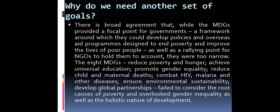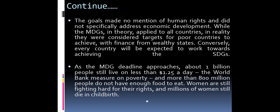The 8 MDGs — reduce poverty and hunger, achieve universal education, promote gender equality, reduce child mortality, combat HIV, malaria and other diseases, ensure environmental sustainability, and develop global partnerships — failed to consider the root causes of poverty and overlooked gender inequality as well as the holistic nature of development. The goals made no mention of human rights.